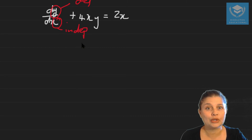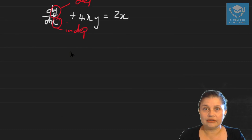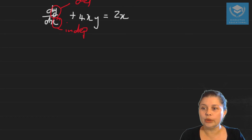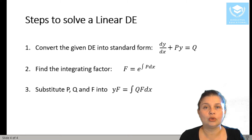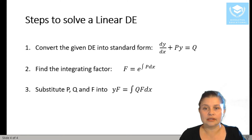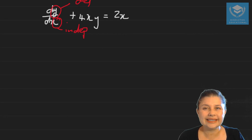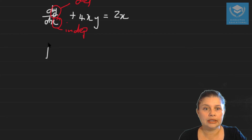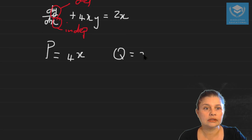If you recall from our previous video — the one that gave the overview of linear differential equations — we put down the steps in order to solve a differential equation. Step number one is to convert the differential equation into standard form. If you look at the equation here, it is actually already in standard form, because you can see your p is 4x and q is 2x.